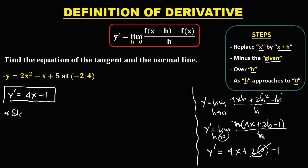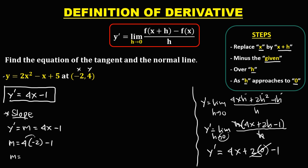To find the slope, since y prime is equal to the slope and y prime is 4x minus 1, the slope equals 4 times x. Since in the given coordinate x is negative 2, we have slope equals 4 times negative 2 minus 1, that's negative 8 minus 1. Therefore the slope is negative 9.